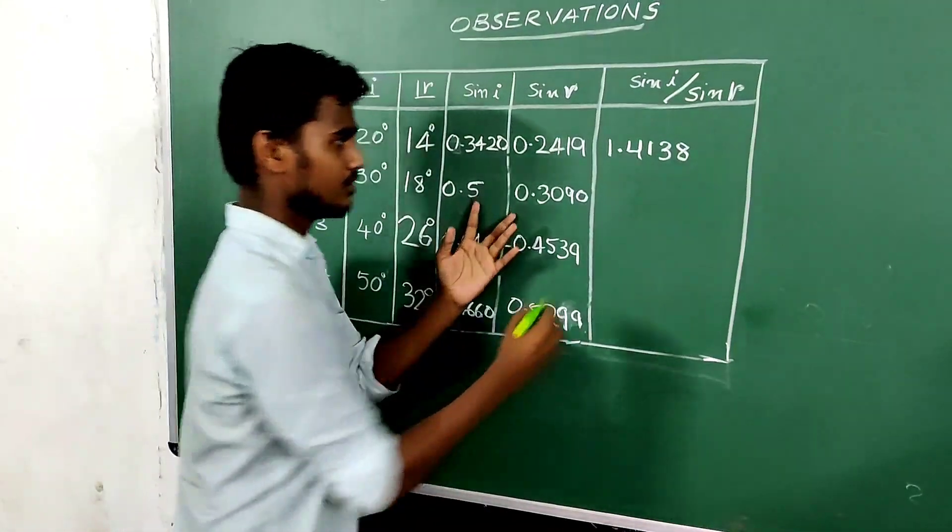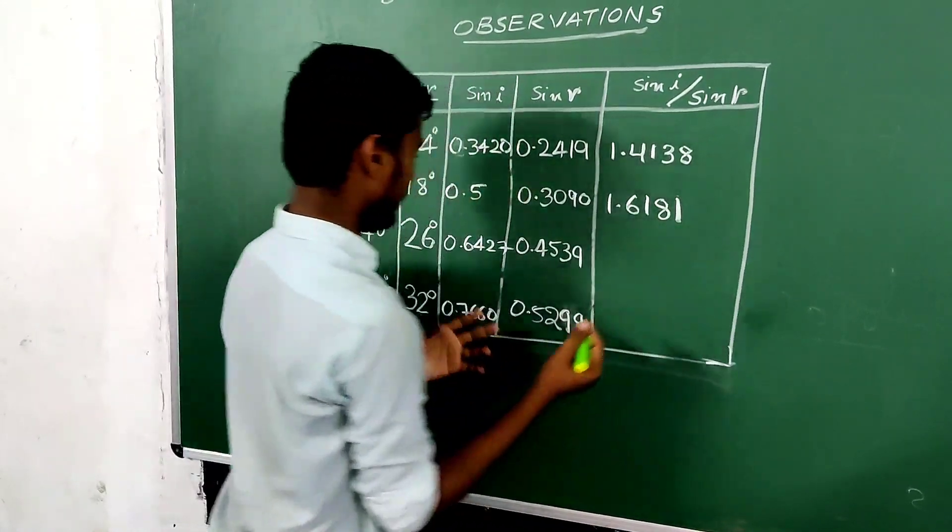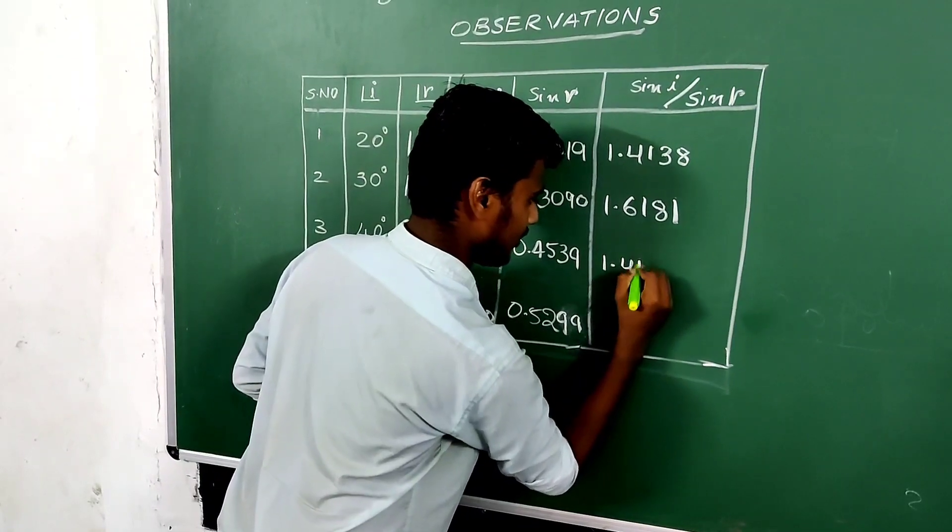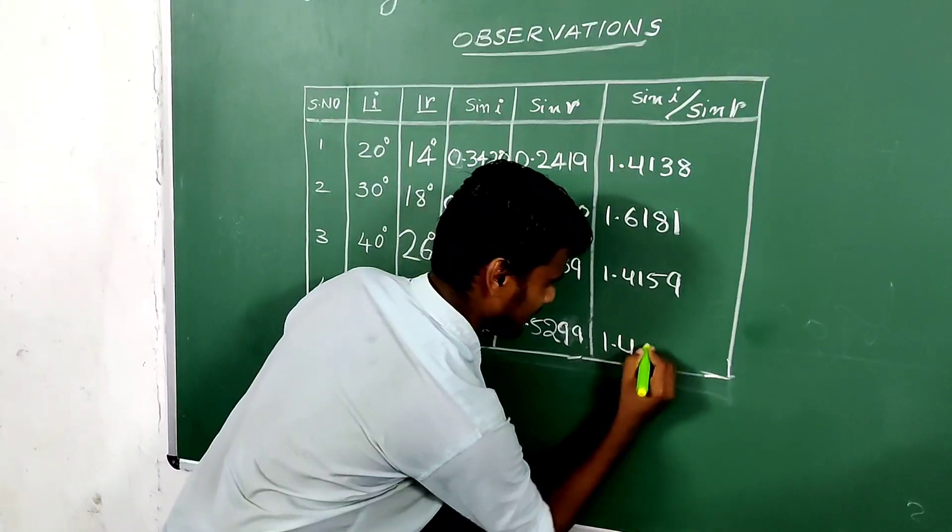And for these two is 1.6181. And for these two is 1.6181. And the third 1.415. The last one is 1.415.